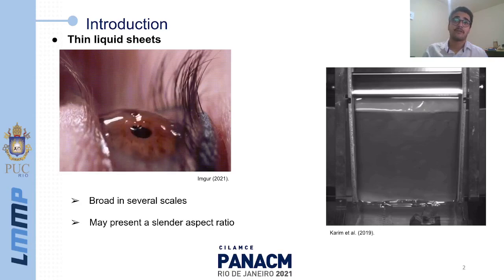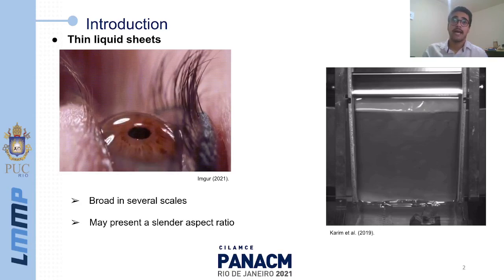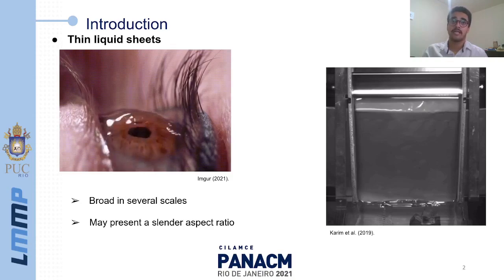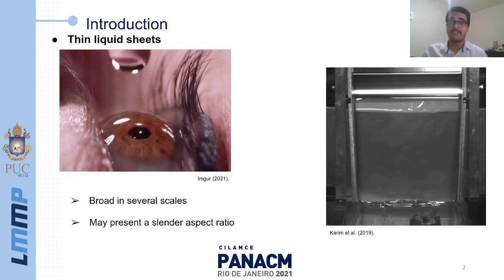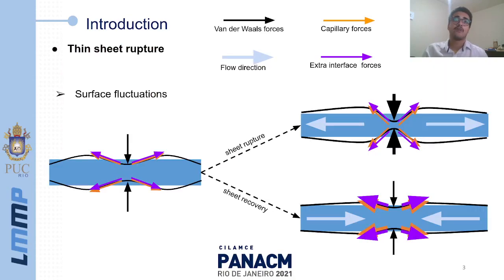Liquid sheets are broadly found in nature, such as the tear film that coats the human eye, and also in industrial applications like the curtain coating technique. They may present a slender aspect ratio and an interface that is free to deform. Fluctuations on the surface of the liquid sheet may affect the stability of the system, so the understanding of the stability of these systems is of fundamental importance.